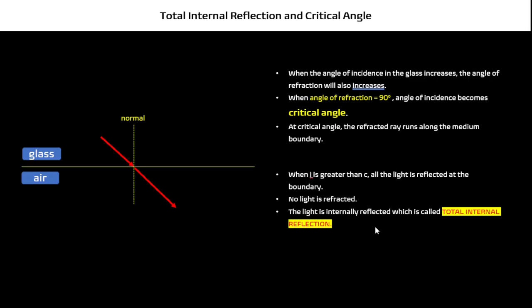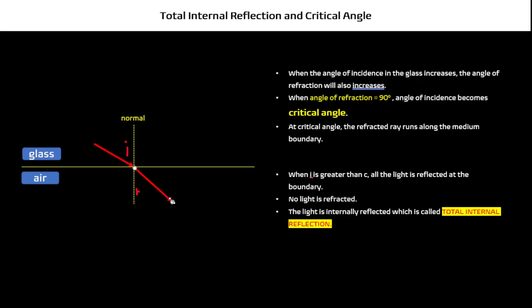Now let's talk about total internal reflection, which is a slightly difficult concept in this chapter. You have your angle of incidence, and your light ray will be refracted. Since this is from less dense to denser medium, it will be refracted towards the normal. When your angle of incidence increases, your angle of refraction will also increase, and at one point it will be at 90 degrees. When the angle of refraction is at 90 degrees, your angle of incidence is at a special angle which we call the critical angle.